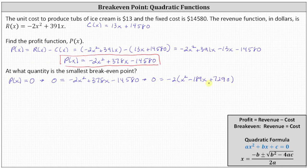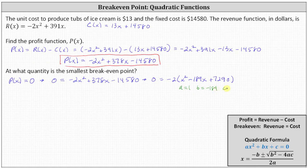It looks like we could solve this by factoring, but because the coefficient of x is negative 189 and the constant term is 7290, let's go ahead and use the quadratic formula. Using the trinomial inside the parentheses, we can use a equals one, b equals negative 189, and c is equal to 7290. This is the benefit of factoring out the negative two. We can use these values for a, b, and c, rather than negative two, 378, and negative 14,580.